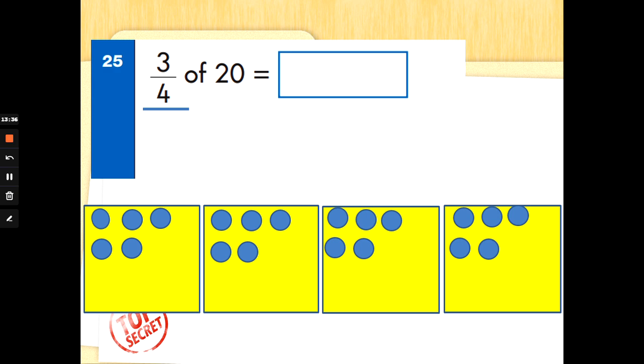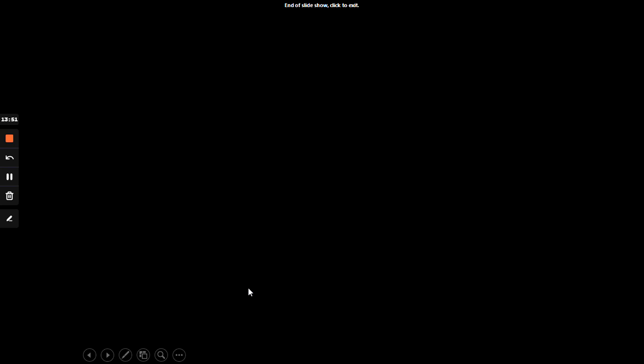Now, this is a challenge because we've got to do a few things to get the answer. So, we've split 20 into 4 boxes. I don't want to know 1/4, though. I want to know 3/4. Look at that top number. And we can count in 5s. 5, 10, 15. 3/4 of 20 is 15. Absolutely fantastic.